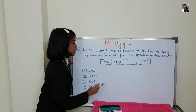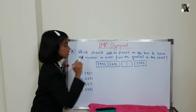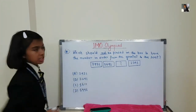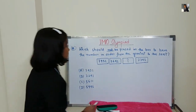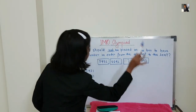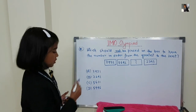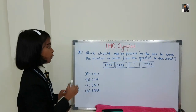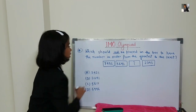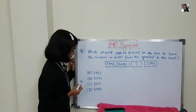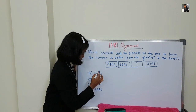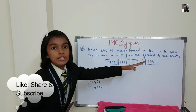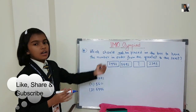The sequence shown is: seven thousand nine hundred fifty-two, then five thousand six hundred forty-two, then a question mark, then two thousand three hundred forty-one. Testing two thousand four hundred thirty-one — yes, it would be in descending order, so it is not the answer. Testing three thousand two hundred forty-one — yes, it also keeps descending order, so it is not the answer either.